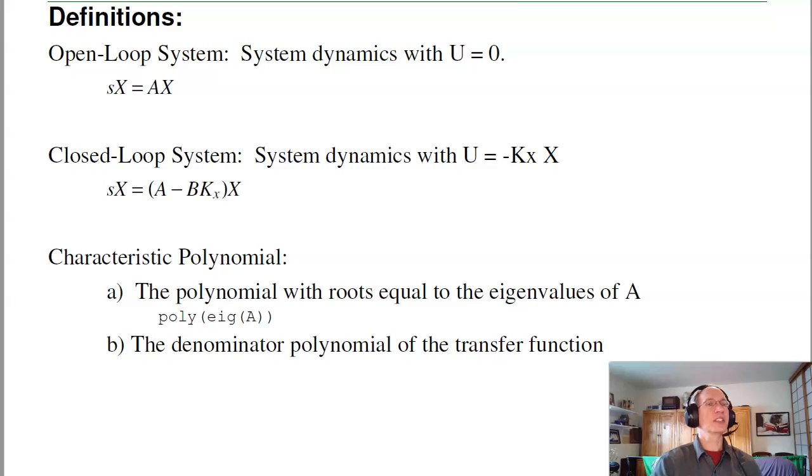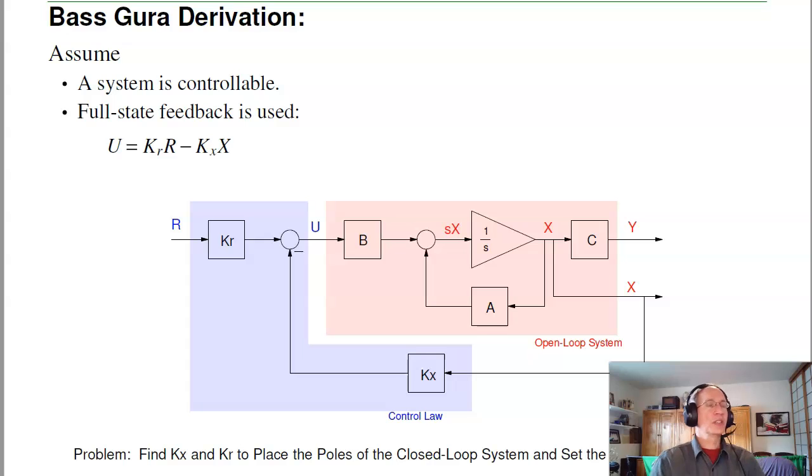A couple definitions to start with. Open loop system: the open loop system is no feedback, that's just your A matrix. The eigenvalues of A are the poles of the open loop system. The closed loop system is with feedback. Here the dynamics are A minus BKX. Those eigenvalues are where I want to place the closed loop poles. A system's characteristic polynomial is the polynomial that has roots equal to the eigenvalues of A. It's also the denominator polynomial of the transfer function.